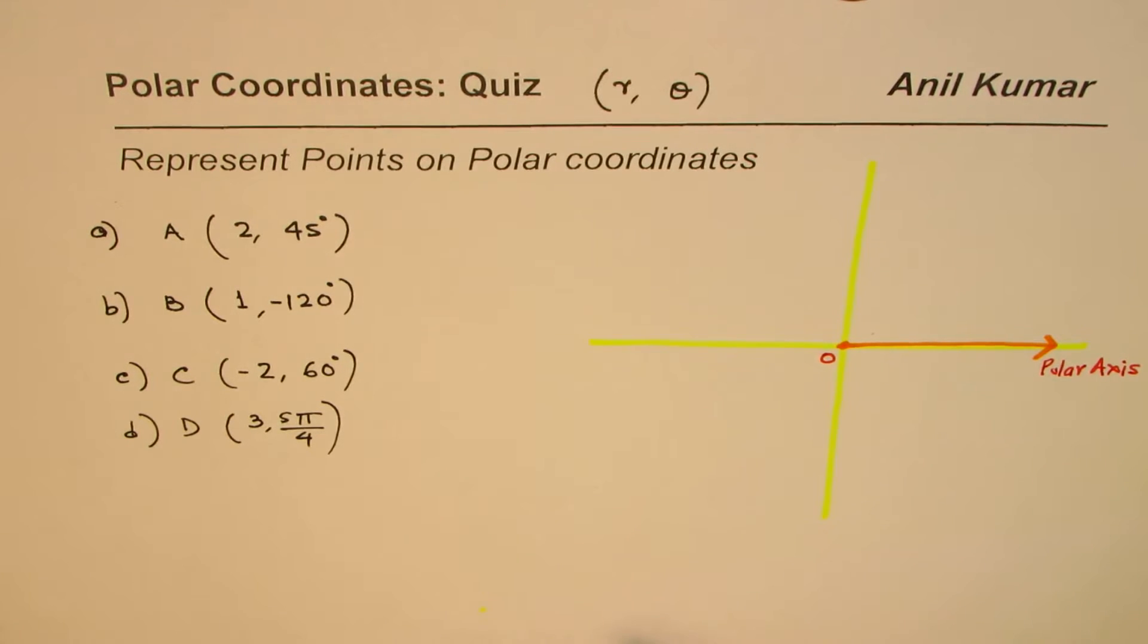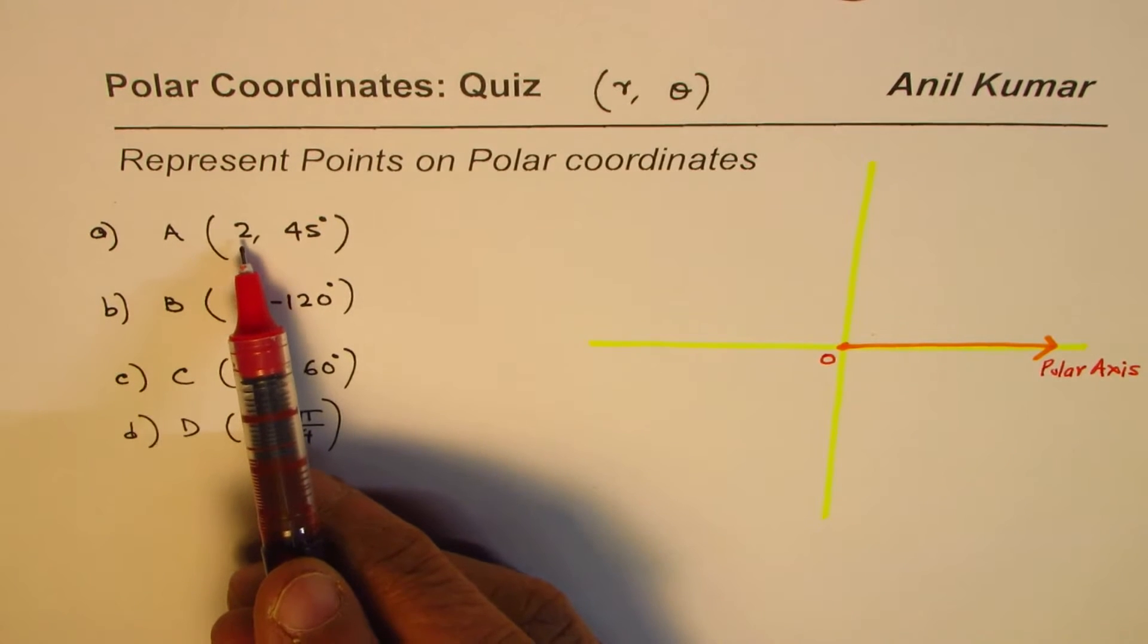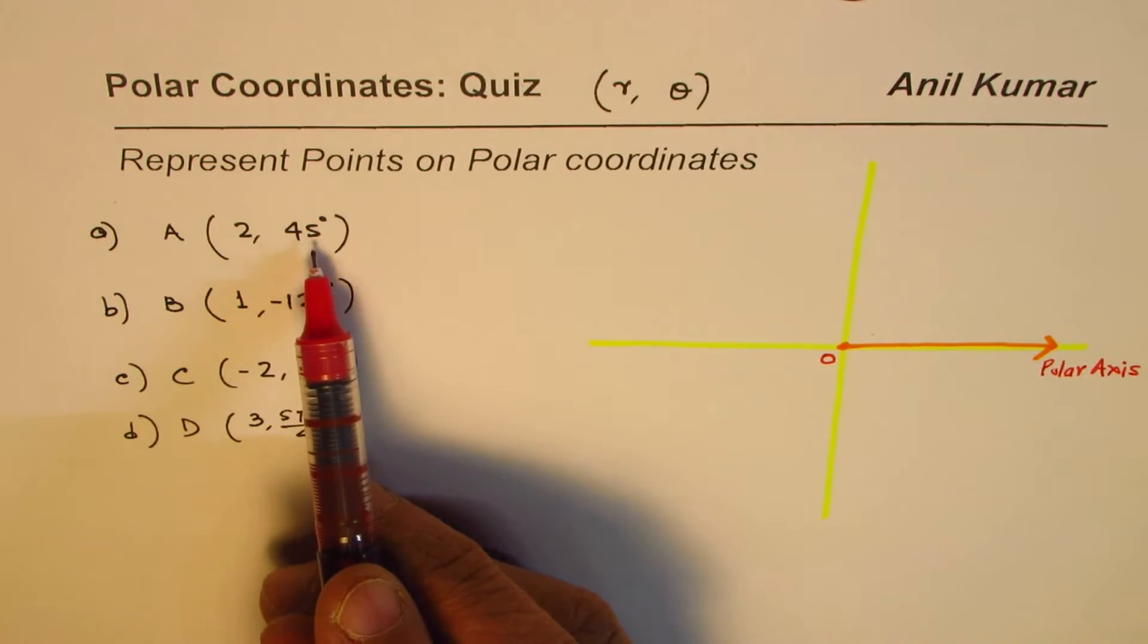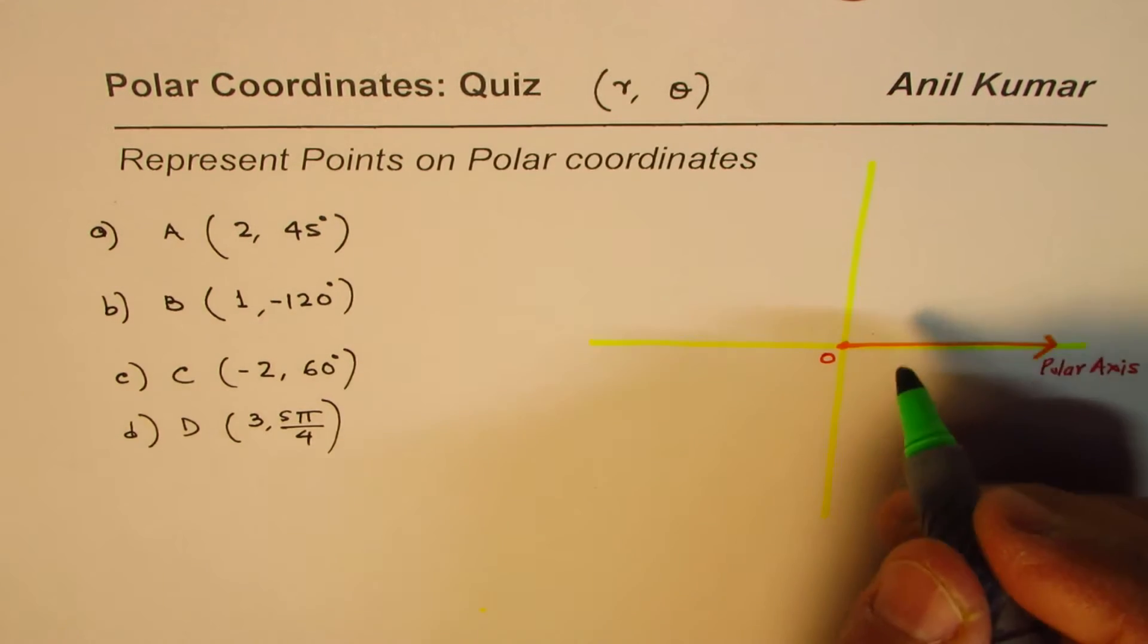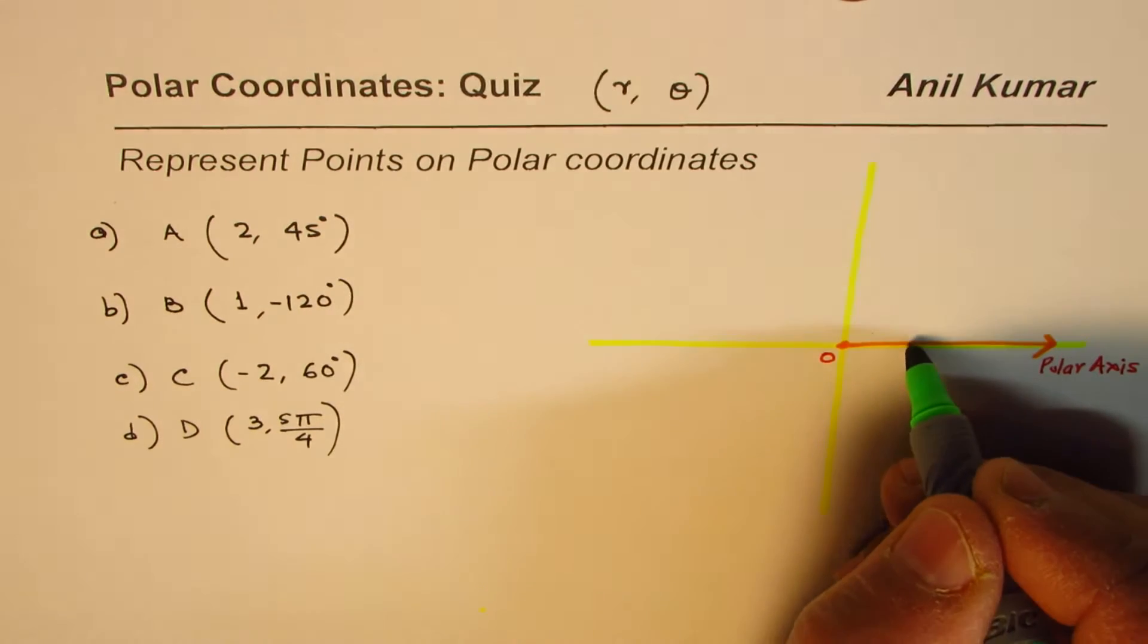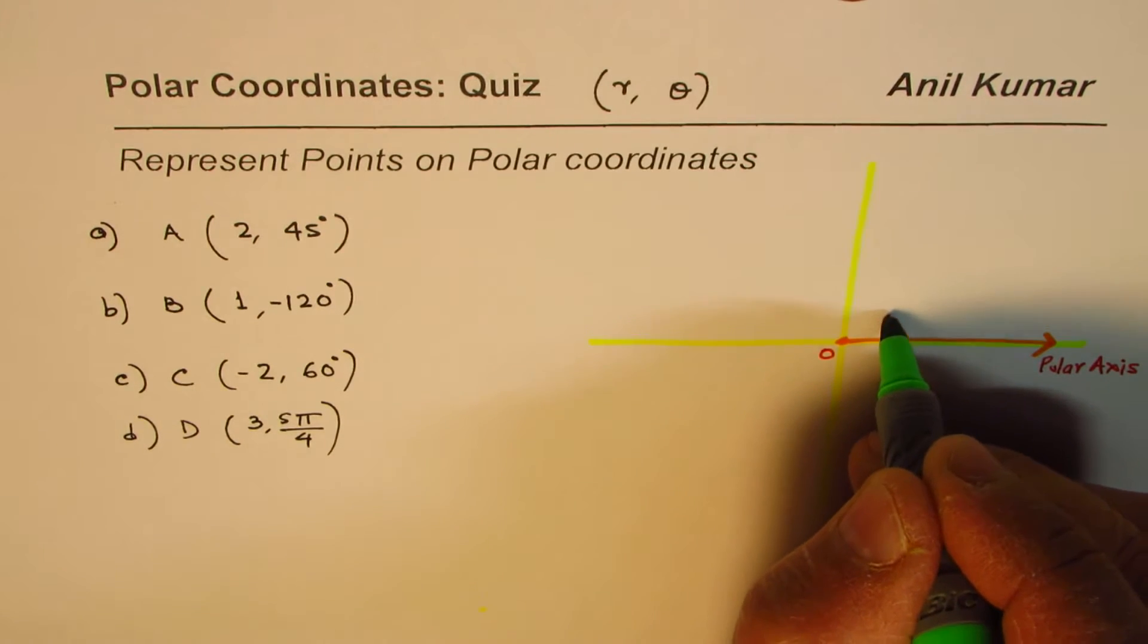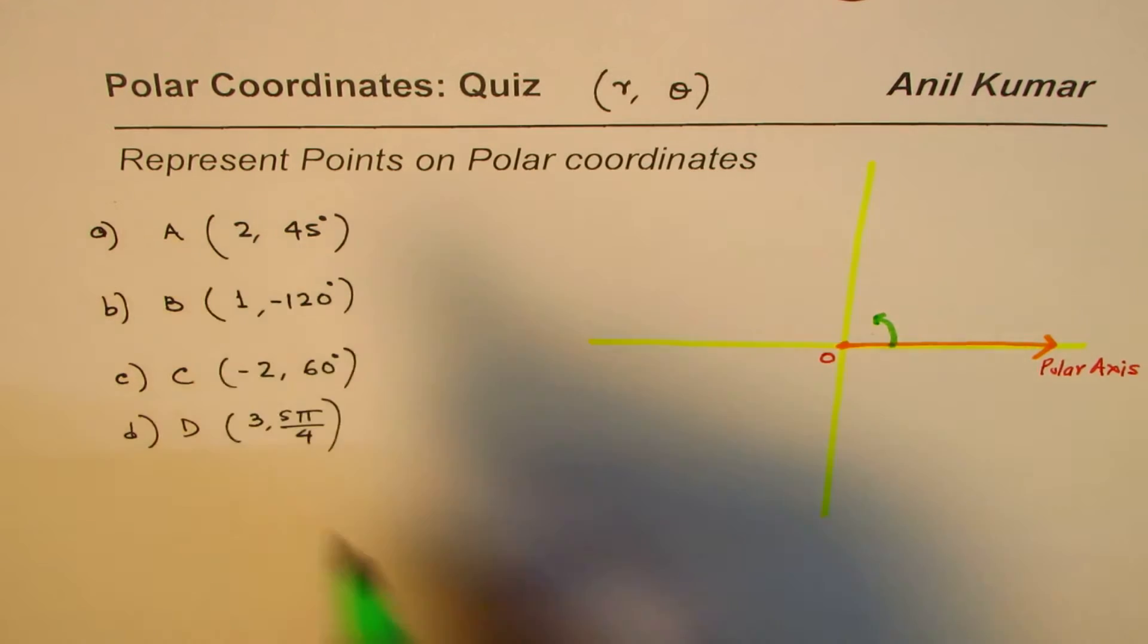You need to plot these points. You can pause the video, answer the question, and then look into my suggestions. r value is 2, theta is 45. Always go for the angle first.